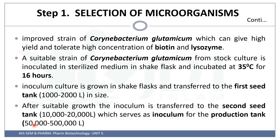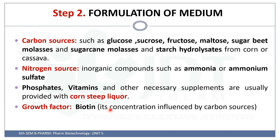Usually, production is carried out in a 50,000-liter fermenter tank. So this is the step of selection of microorganisms, where Corynebacterium glutamicum and its improved strain are used.